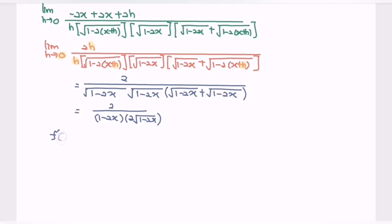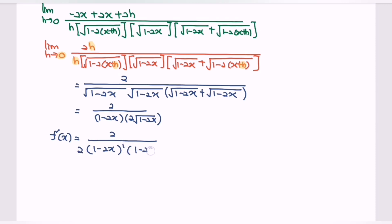So f prime x is equal to 2 over (1 minus 2x) to the power of 1, multiplied by 2, multiplied by (1 minus 2x) to the power of 1 over 2. By applying the rules of indices, f prime x is equal to 1 over (1 minus 2x) to the power of 3 over 2.